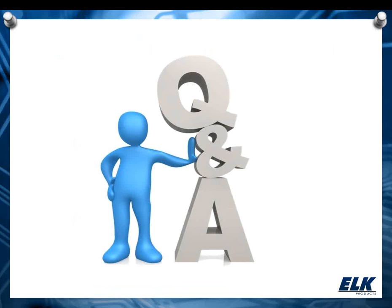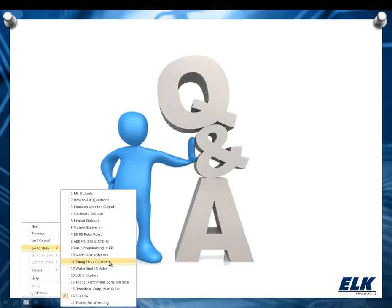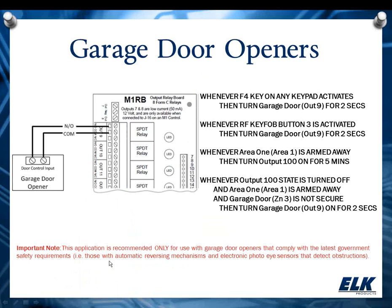Question: How does the system know the garage door is secure? It's going to know based on a sensor — they make special garage door sensors designed to deal with the movement of the garage door and encased so they can be run over by a car without damage. You get a special door sensor for your garage door tied to an input on the M1 — in this example, Zone 3 — and that's how we know whether or not the door is open.